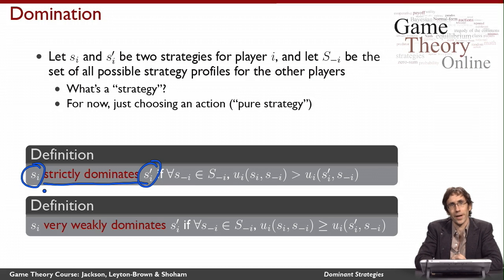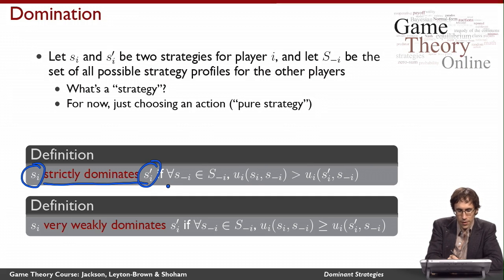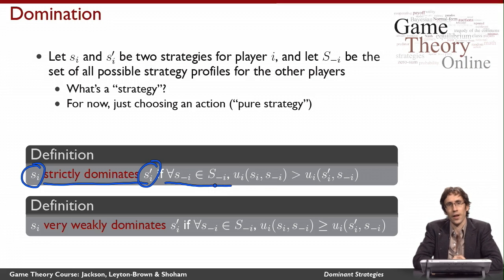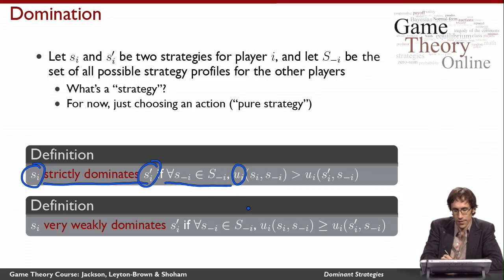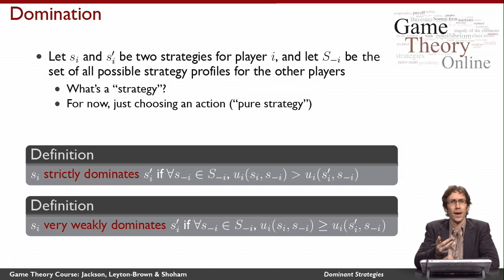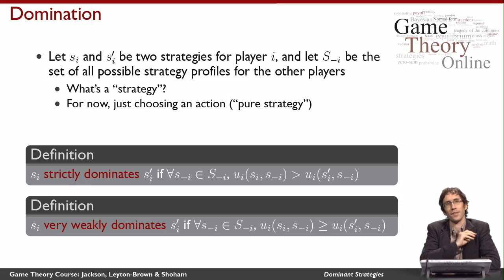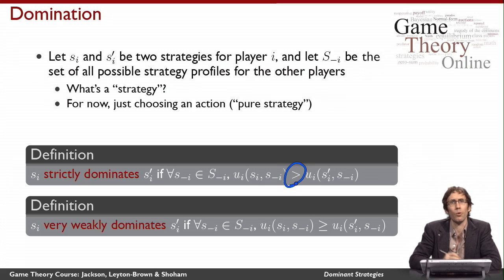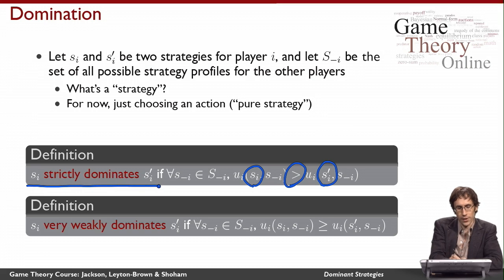First we have the notion of strict dominance. si strictly dominates si-prime if, for every strategy profile of the other agents — in other words, for every joint set of actions they could take — the utility that player i gets when he plays si is strictly more than the utility he gets when he plays si-prime. So no matter what everybody else does, he is always strictly happier playing si than si-prime, meaning si strictly dominates si-prime.